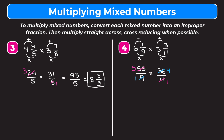Now we multiply the numerators: 5 times 4 is 20. Multiply the denominators: 1 times 1 is just 1. And anything over 1 is just itself, so 20 over 1 is just equal to 20. So we get 20 as our final answer.